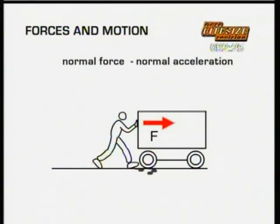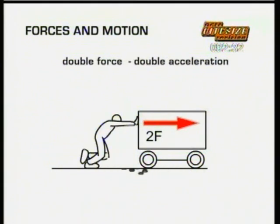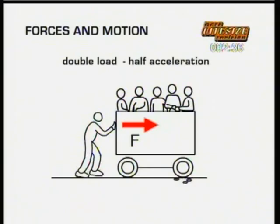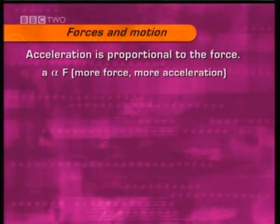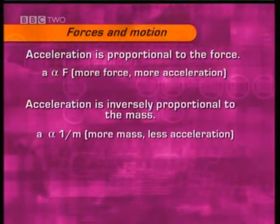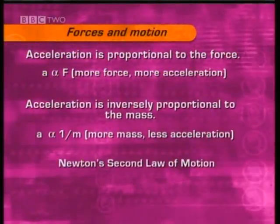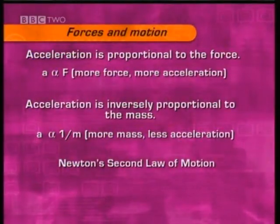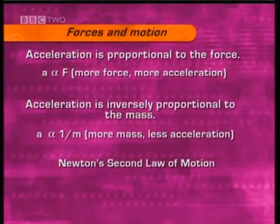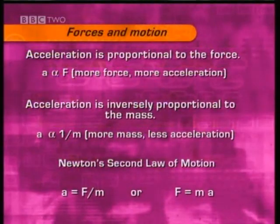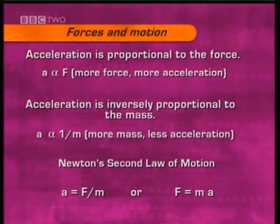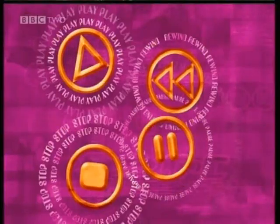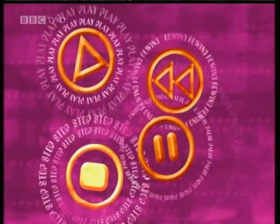In the Foundation Physics program, we saw that you need an unbalanced force to make something accelerate or decelerate. If you double the force, you double the acceleration. If you double the load — that's the mass — you halve the acceleration. A mathematical way of saying that is that the acceleration, A, is proportional to the force, F, but inversely proportional to the mass, M. That's known as Newton's second law of motion. Those two can be combined to give an equation: acceleration A equals F divided by M, or the way it's most often written, F equals MA — force equals mass times acceleration. That's it for forces and motion.